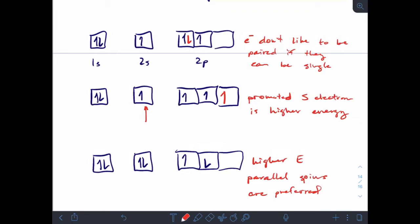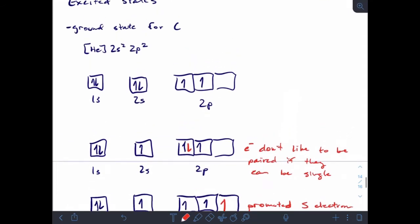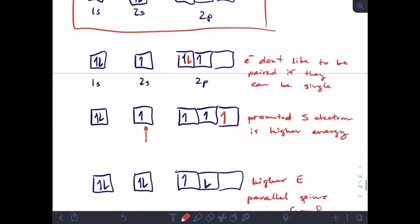So anytime we write an electron configuration outside of the normal—if we move electrons into higher energy orbitals, or we force them to pair when they would rather be single, or if we have non-parallel spins when they ought to be parallel, these are all examples of excited state electron configurations.